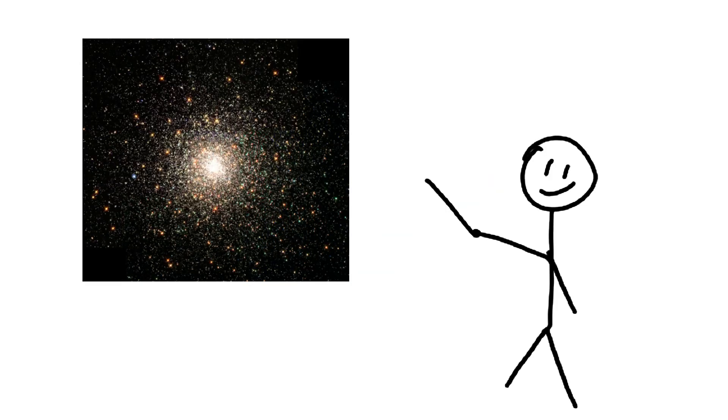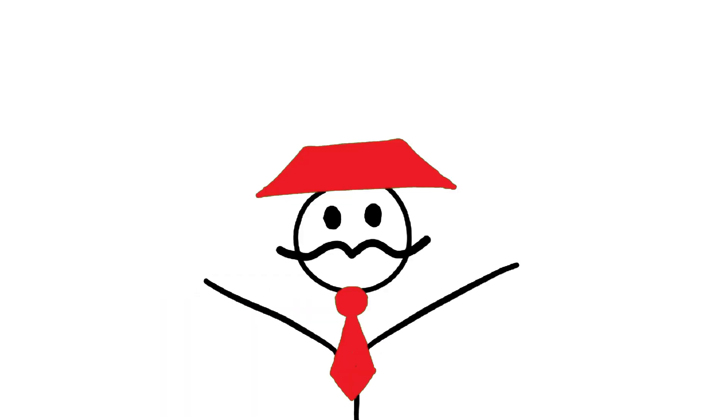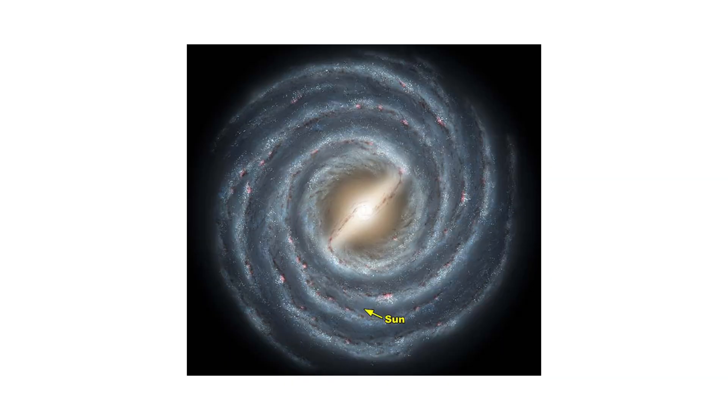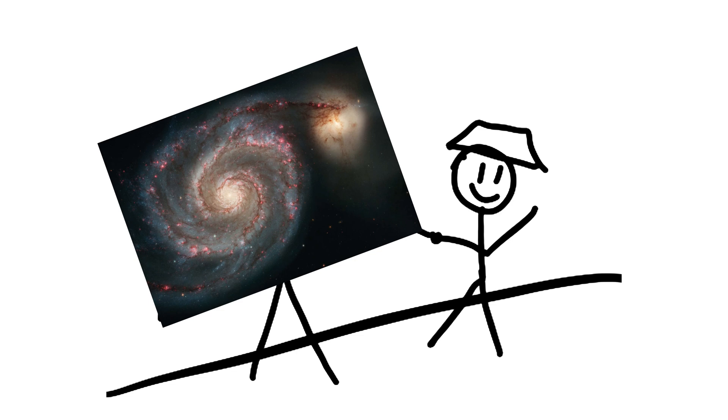Globular clusters, on the other hand, are much older and can contain hundreds of thousands or even millions of stars. They are found in the halo around galaxies, including our Milky Way. Globular clusters are tightly packed, with stars orbiting closely together around a common center.